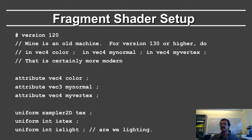Here is the setup in the fragment shader. We've already talked about the vertex shader, which simply passes in the color, the normal, and the vertex. So here are the inputs: taking in color, normal, and vertex. This variable will depend on your specific system — take it from the skeleton code, whether it's attribute or something else.